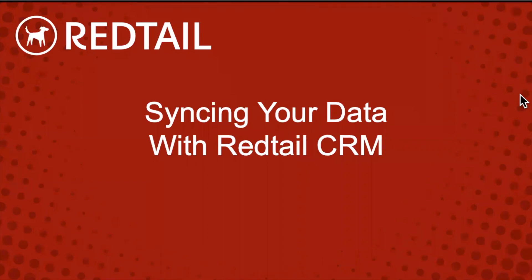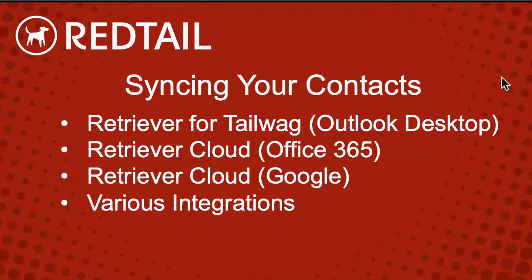First, let's talk about syncing your contacts. The options you have are: syncing with Retriever for Tailwag, which is a desktop Outlook sync — a program you download that syncs directly with your desktop version of Outlook. We also have Retriever Cloud, either the Office 365 version or the Google version. There are also other integrations where you can sync contacts, like different planning software or marketing tools.